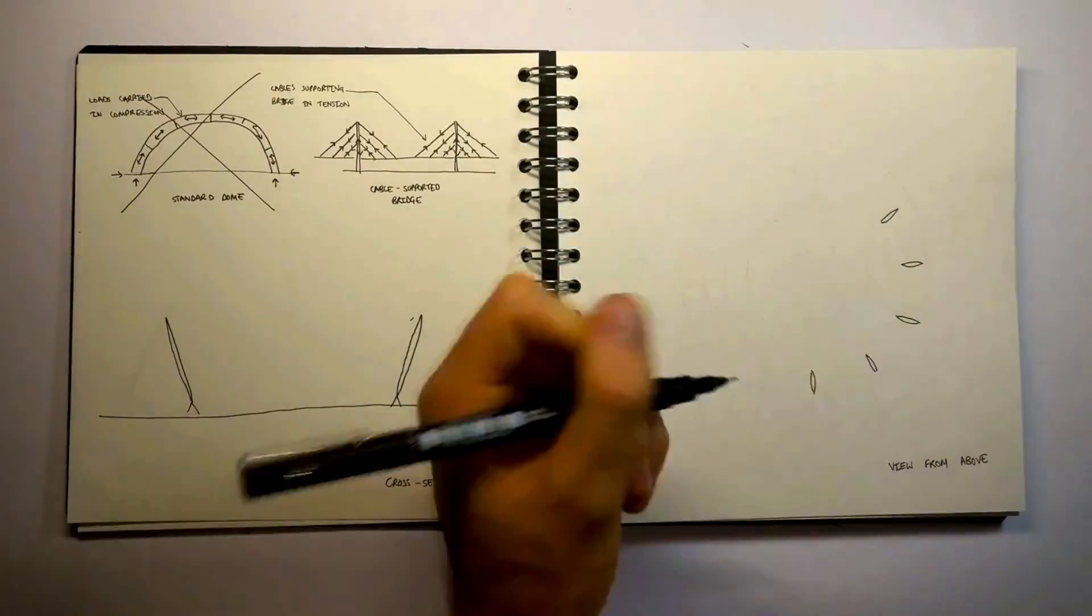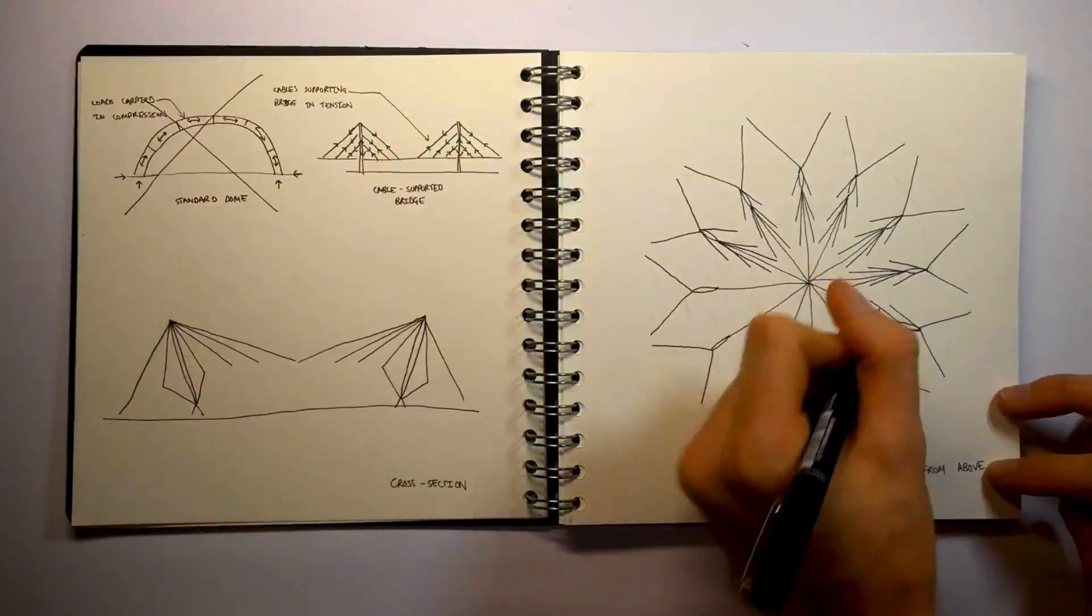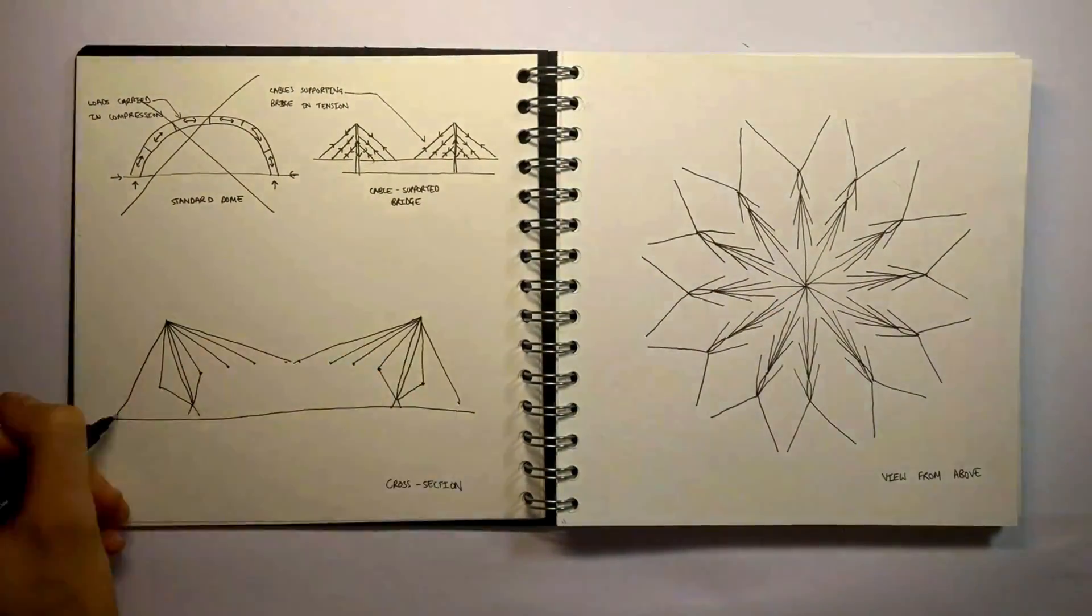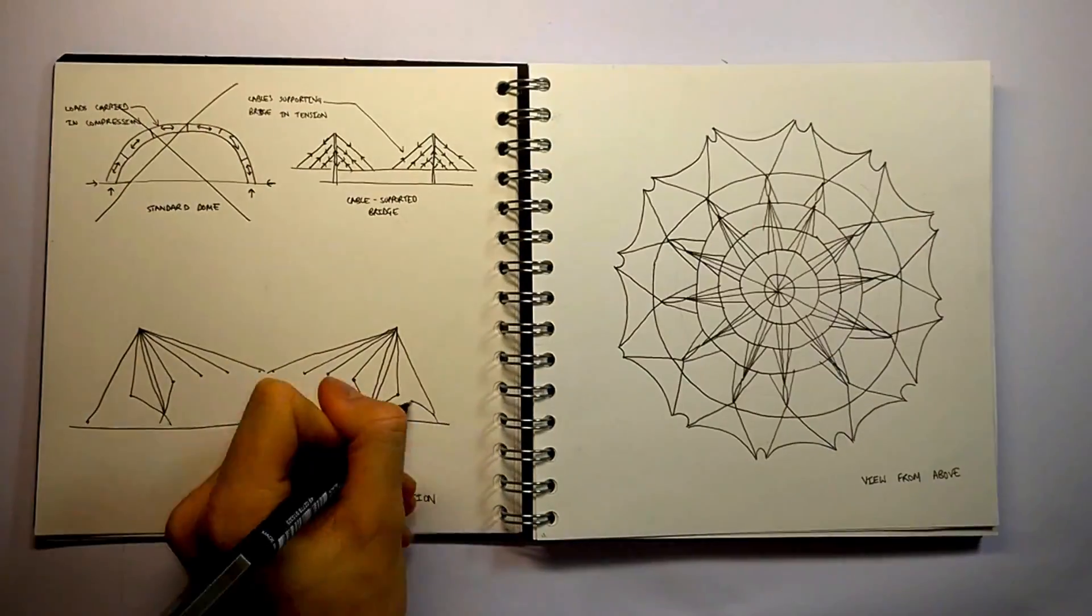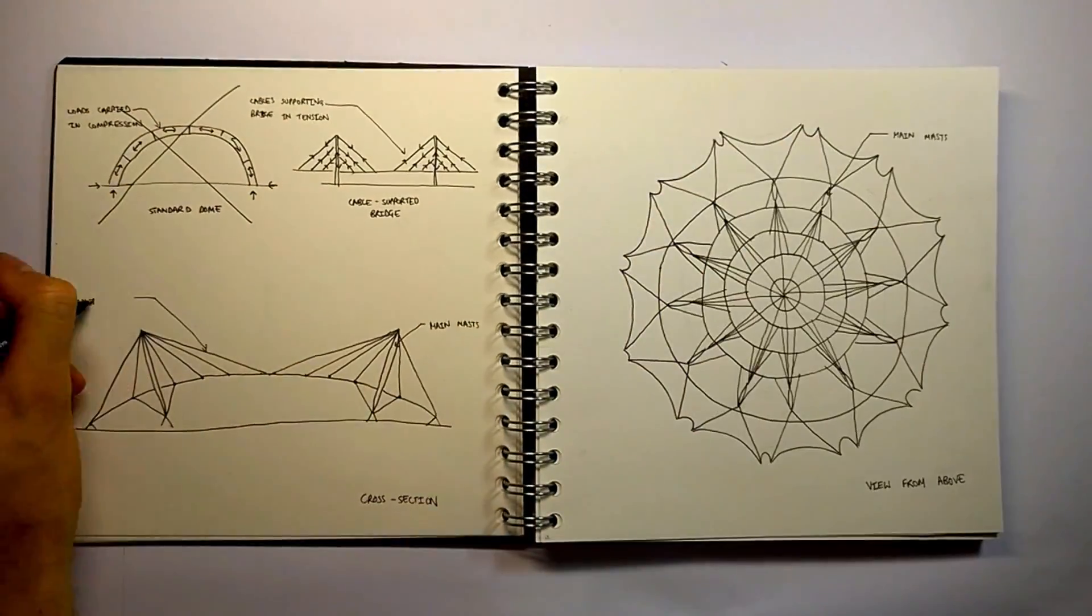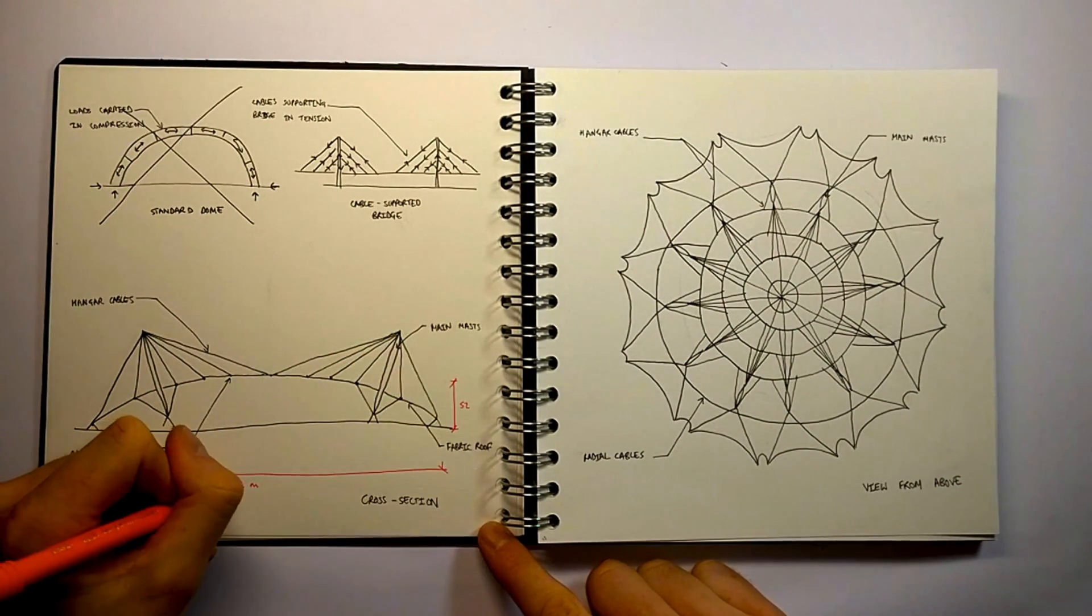Twelve 100m tall masts support cables which extend from the top and bottom of each mast. These cables then in turn support further cables which run around the full circumference of the dome. The radial cables support a 1mm thick roof formed from fibreglass which is coated in teflon.